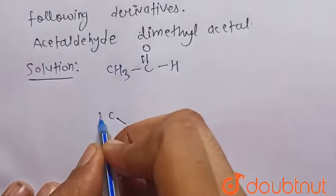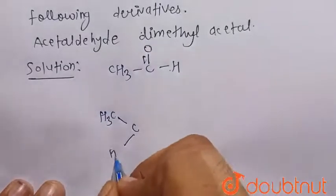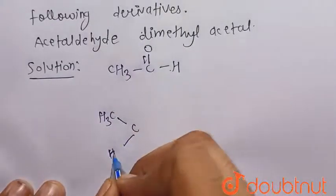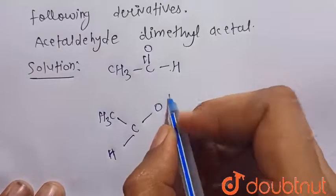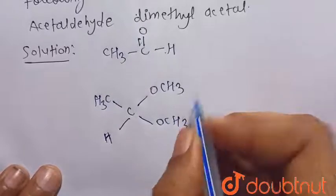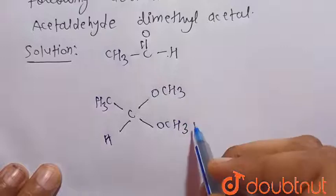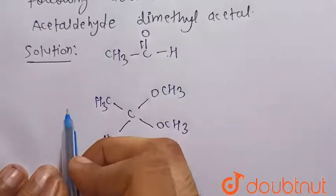So the required structure will be as follows. That is, this CH3 will remain same and this H will remain same. And at the place of C double bond OH, two dimethyl acetal, that is OCH3. This is one OCH3, this is another OCH3. So there are two OCH3, that is dimethyl acetal group present. So this is the required derivative.